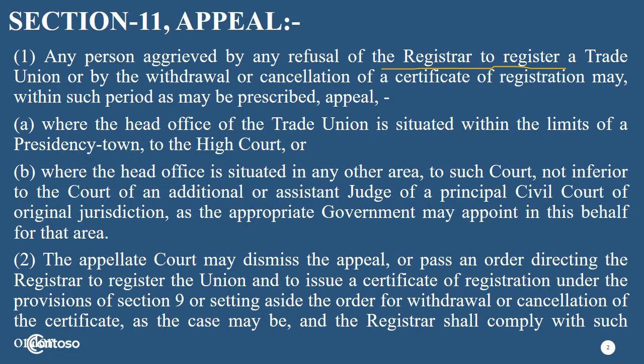I have covered only three points which are relevant to your exam. The appeal is to be made to the High Court, or where the head office is situated in any other area, to such court not inferior to the court of an additional or assistant judge of the principal civil court of original jurisdiction as the appropriate government may appoint in this behalf for that area.